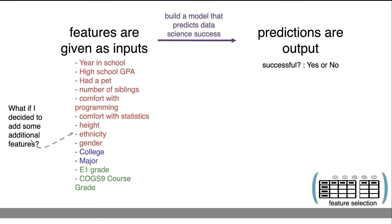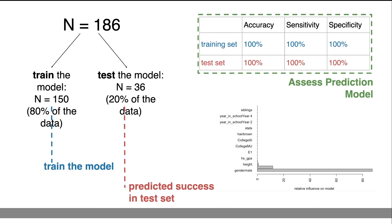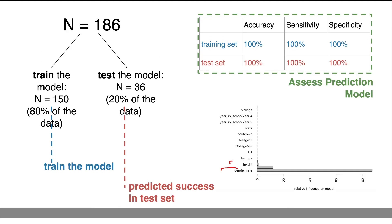What if we add some extra features — maybe that will help the situation? If we add in height and gender, those have really high importance scores. Why is gender such an important factor in predicting success? And if we use this model, it turns out we get 100% accuracy on everything. Do you think that's a good prediction? Why would this be a bad prediction?